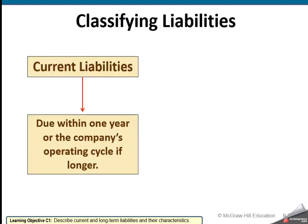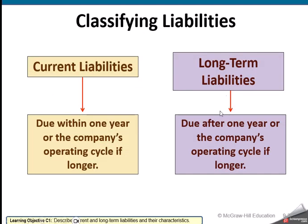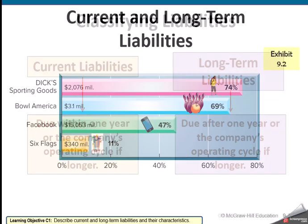So how do we classify these liabilities? This chapter we'll talk about current liabilities; the next chapter we'll talk about long-term liabilities. Current liabilities are ones that we owe people within the current year, or the operating cycle if that would be longer than a year — so normally within the current year.